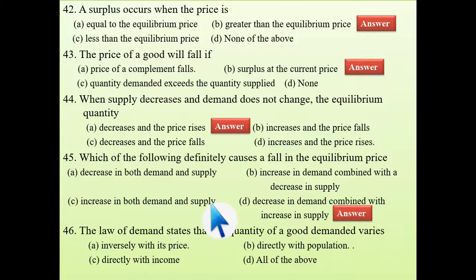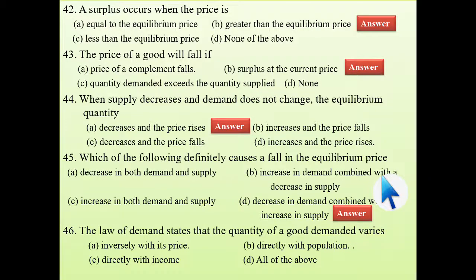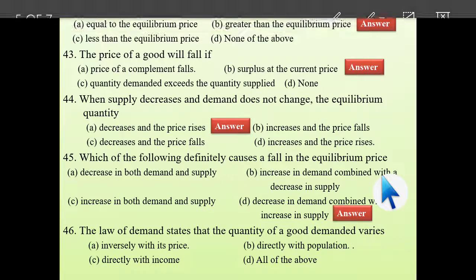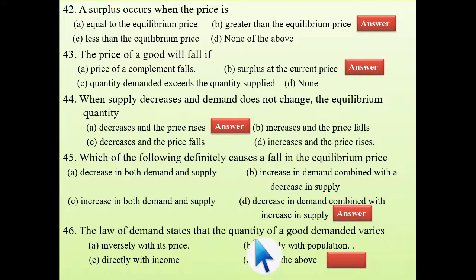Next: the law of demand states that the quantity of a good demanded varies — inversely with price, directly with population, and directly with income. All of these are correct, so the answer is all of the above.